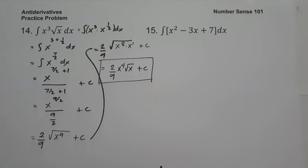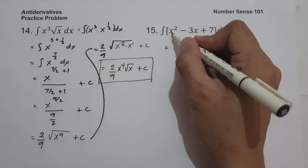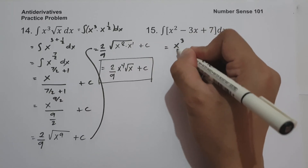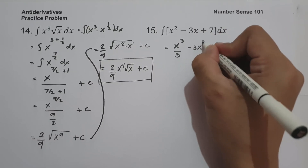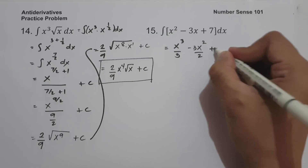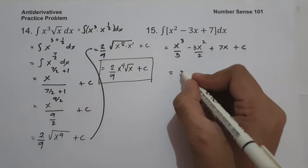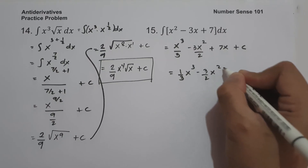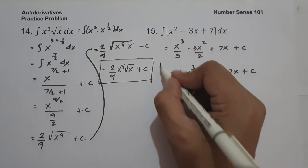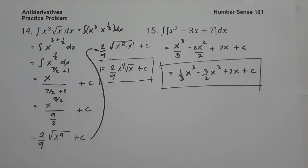On number 15, what is the antiderivative of x squared minus 3x plus 7 dx? The antiderivative of x squared is x cubed over 3, the antiderivative of negative 3x is negative 3x squared over 2, and the antiderivative of 7 is 7x, then add constant c. Or you can write your answer as 1 third x raised to 3 minus 3 over 2 x squared plus 7x plus c. I hope you've learned from this video. Thank you so much for watching, and God bless us all.